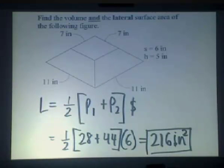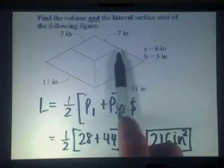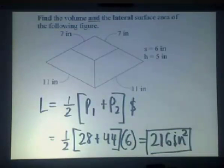Alright, plugging in our values, we have one-half, the perimeter of the small base, which is twenty-eight, plus the perimeter of the large base, which is forty-four, times that s distance. And again, it's the distance down the side of our frustum. Putting all this information together, multiplying carefully, we come up with a value of 216 square inches.